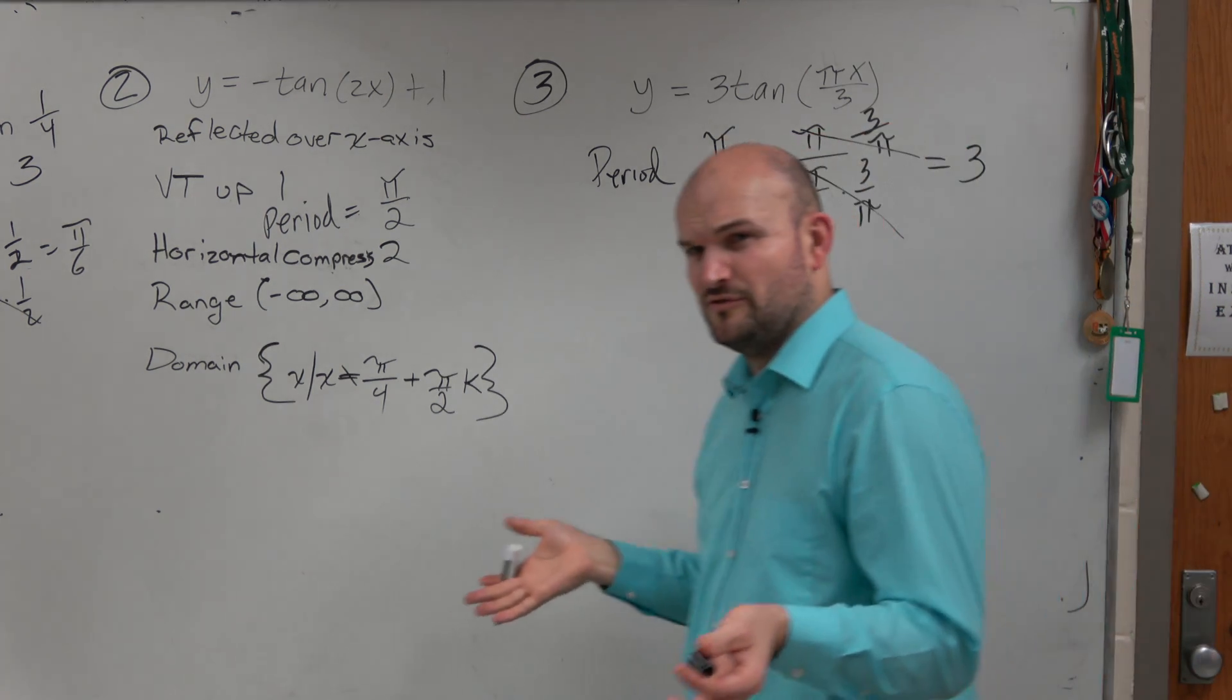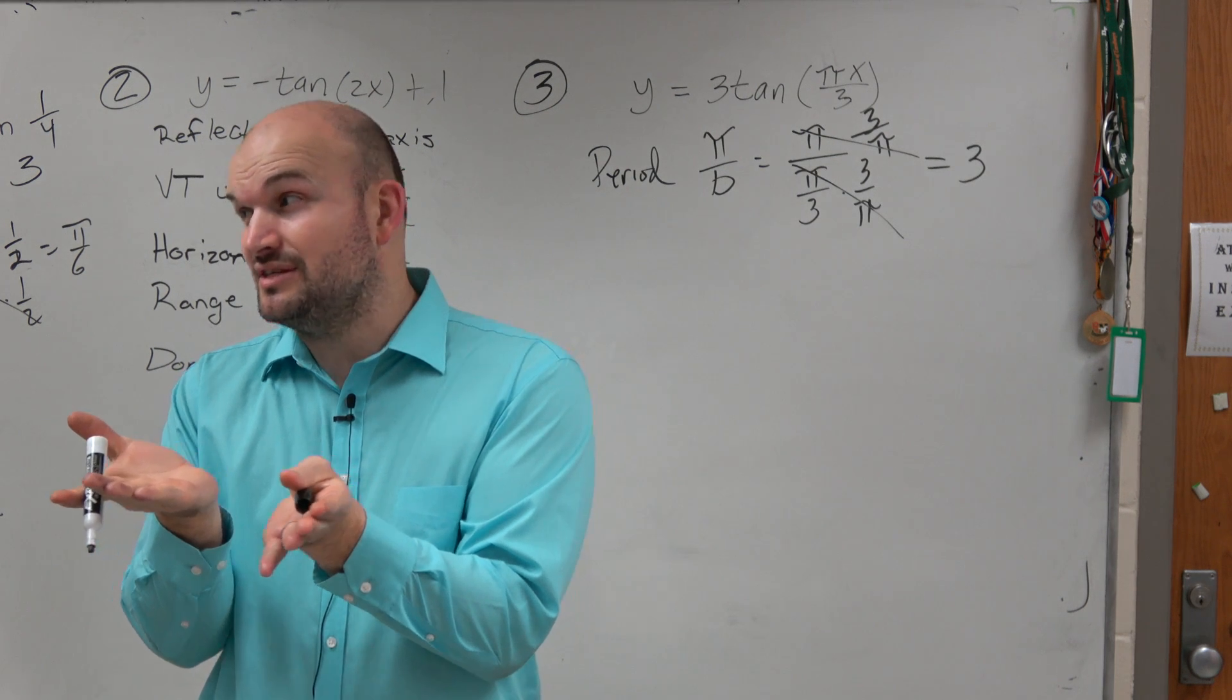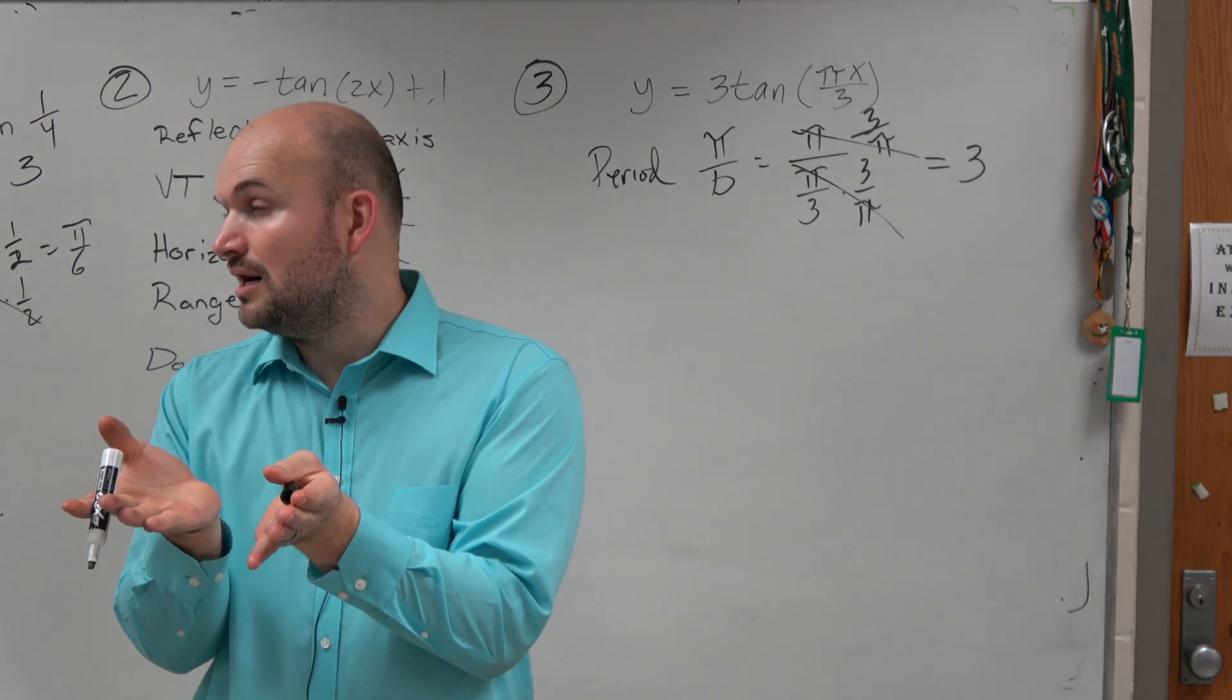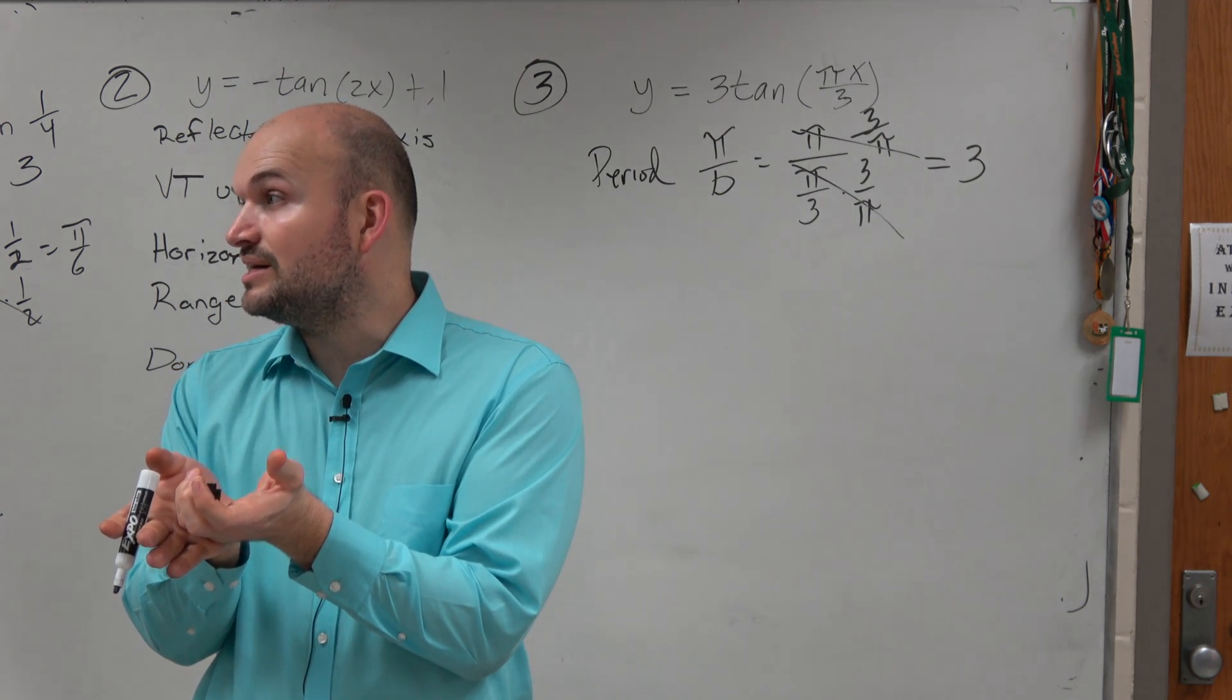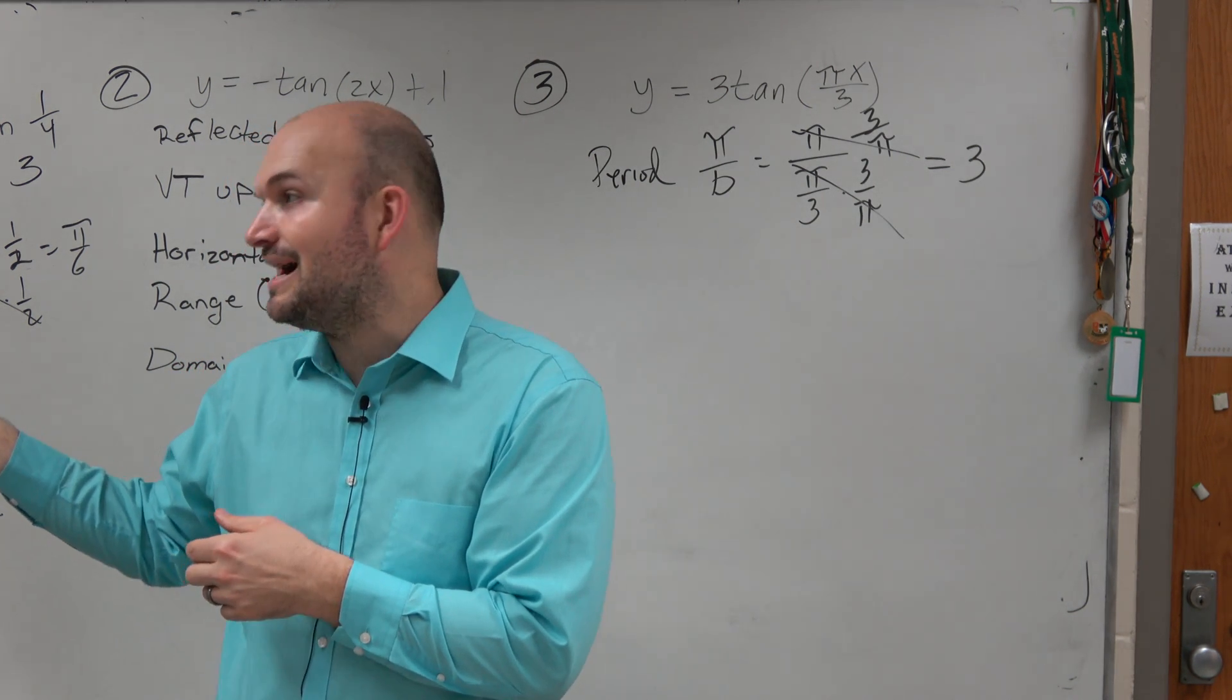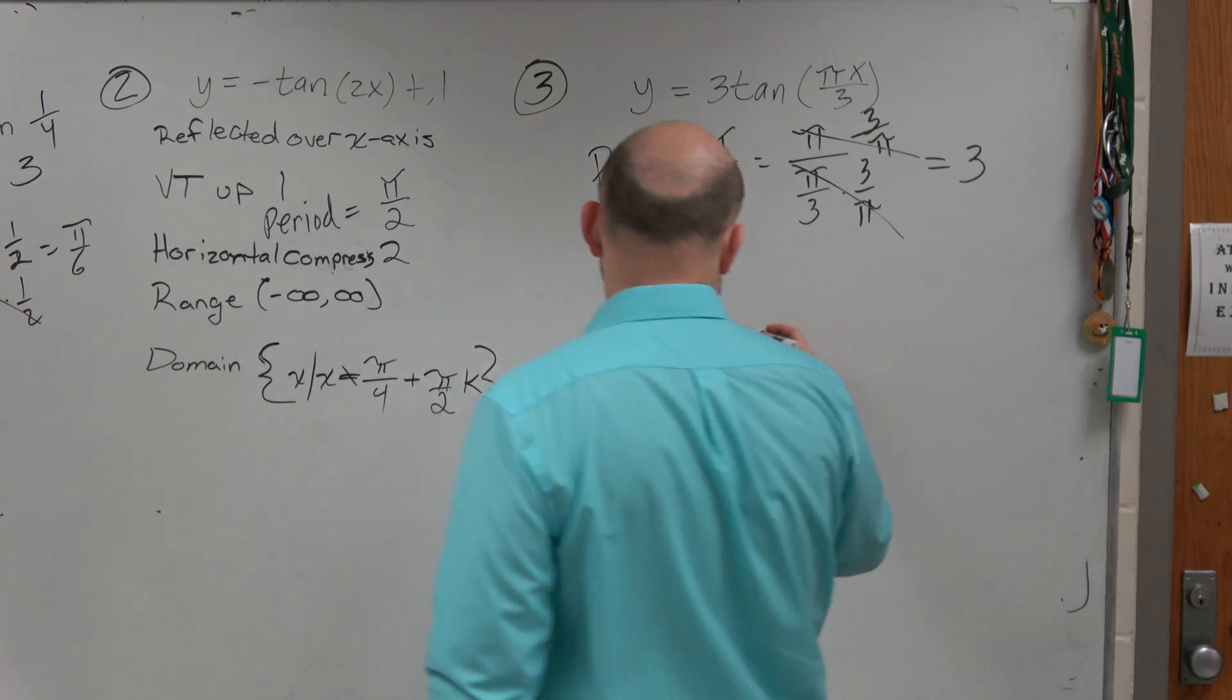That means I have a period of 3, so the graph repeats itself every 3. Now this is kind of nice, actually, right? Because now we don't have to deal with π's. There's nothing in terms of π. We can just deal with integers. So let's actually graph.